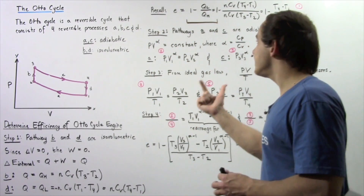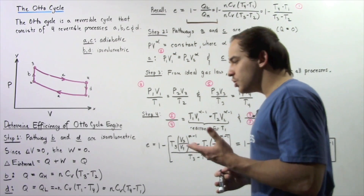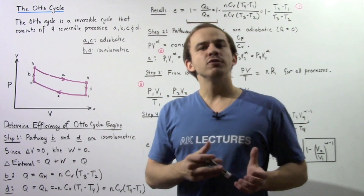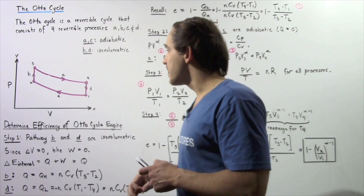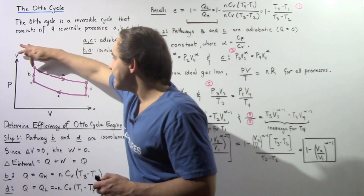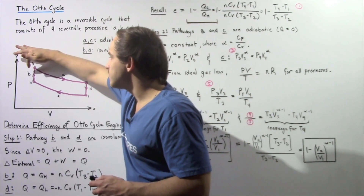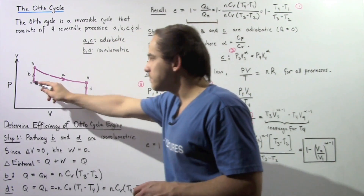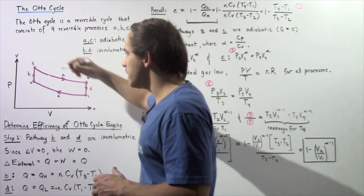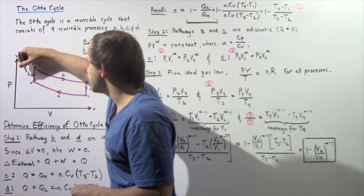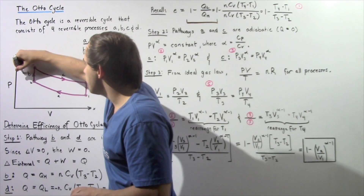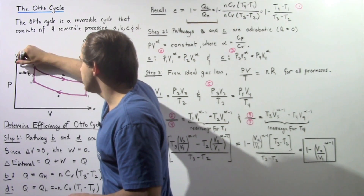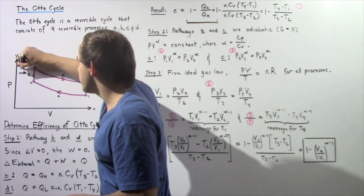What exactly is QH? QH is simply the amount of heat that flows into our system, and that heat flows into our system during process B. As we go from position 2 to position 3, heat flows into our system, and the amount of heat that flows into our system is given by QH.